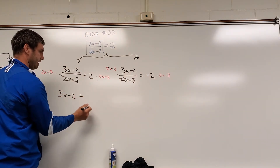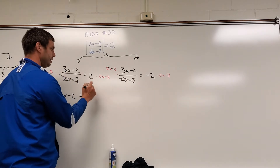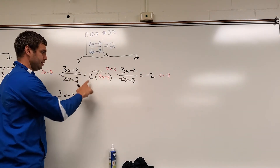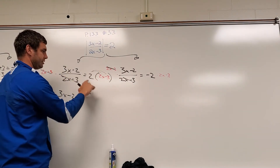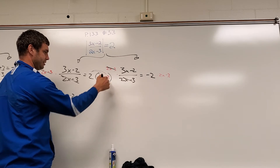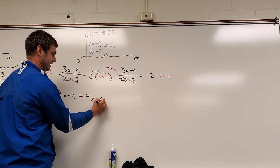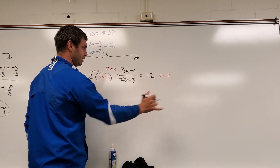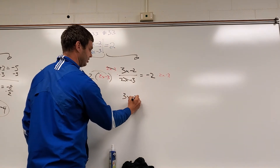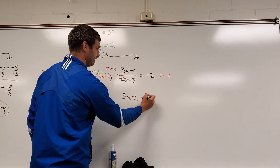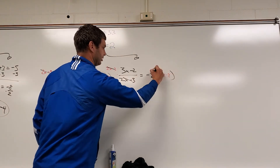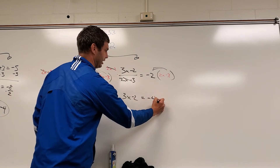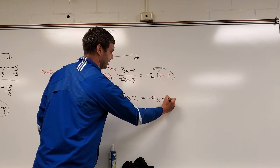On the right side, distributing: 2 times 2x and 2 times negative 3 gives 4x minus 6. For the second equation, distributing negative 2 gives: 3x minus 2 equals negative 4x plus 6.